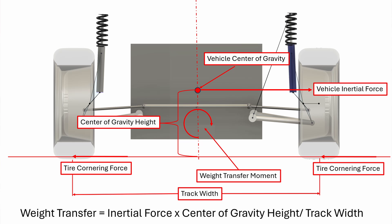This moment is called the weight transfer, and it causes the vertical force on the outside tires to increase, and the force on the inside tires to decrease. The amount of weight transfer is equal to the cornering force multiplied by the height of the center of gravity above ground, and then divided by the track width.